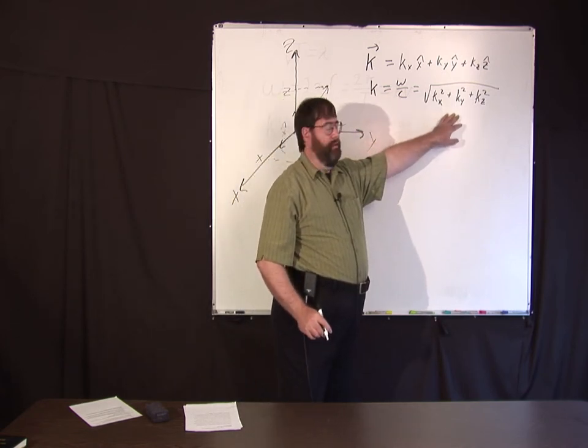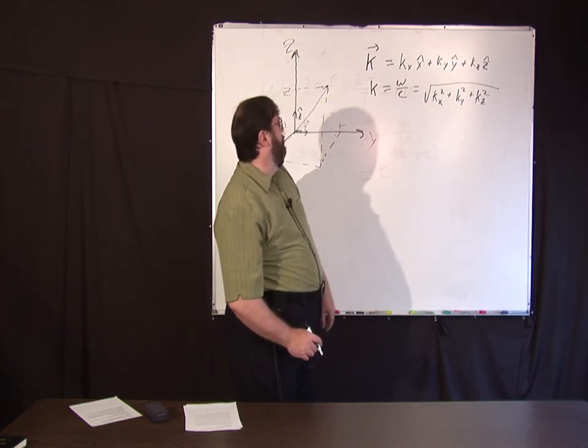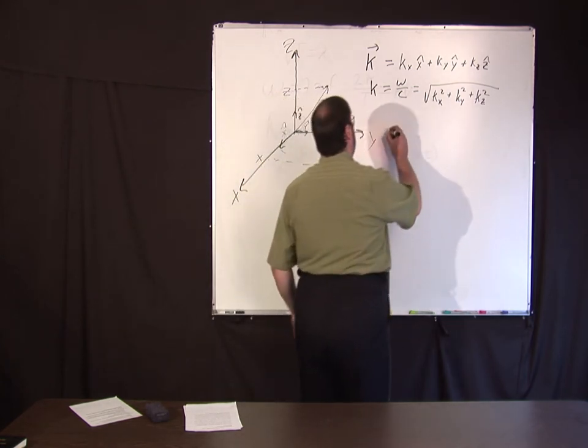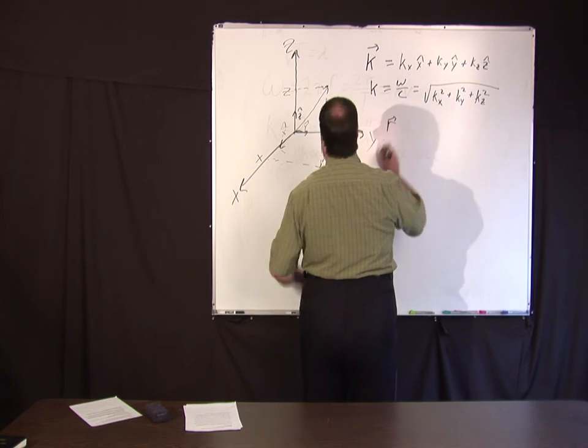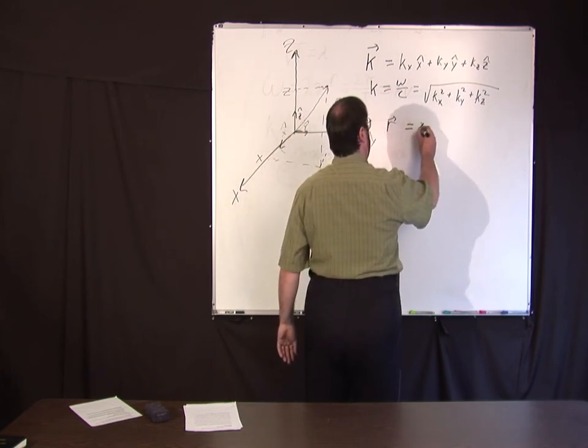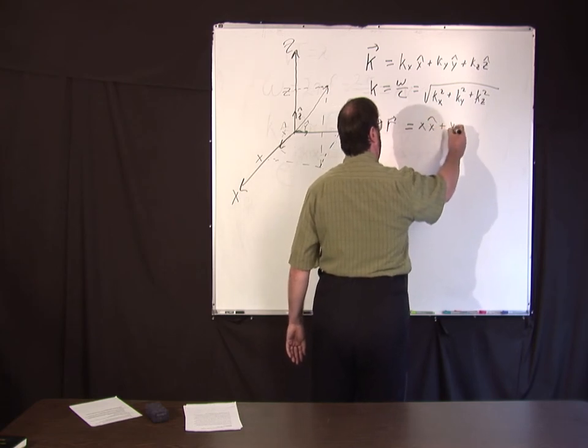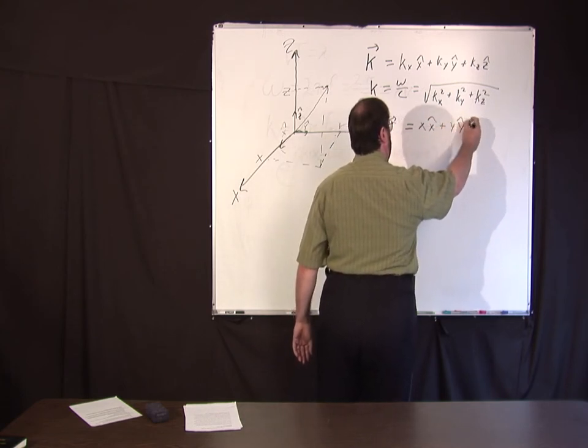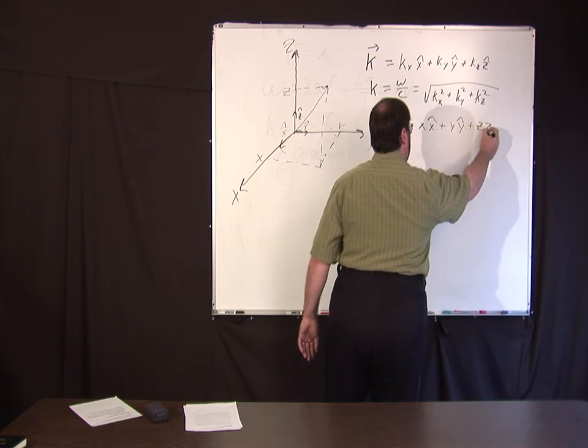And the general position vector r describing any position in space is going to be of the form x x hat plus y y hat plus z z hat, three components of a vector.